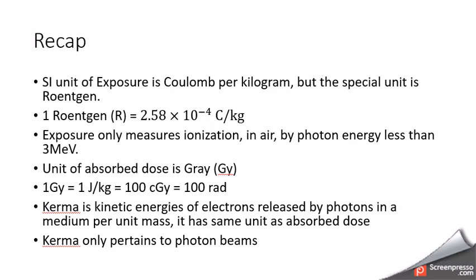Let's recap the gist of this lecture. The SI unit of exposure is Coulombs per kilogram, but the more commonly used unit is the Roentgen, which is a very small value — 2.58 times 10 to the minus 4 Coulombs per kilogram. An important limitation of exposure is that it only applies to photons, at lower energy, in air.